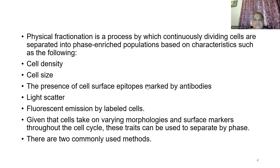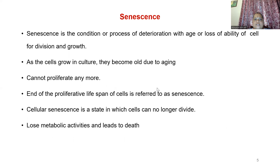Senescence is the condition where the cell loses the ability to divide and grow. As the cell grows in culture, it becomes old due to aging and cannot further proliferate. At the end of the proliferation lifespan of the cell, we call it senescence. The cell cannot grow or divide; it loses all its metabolic activities and leads to death.